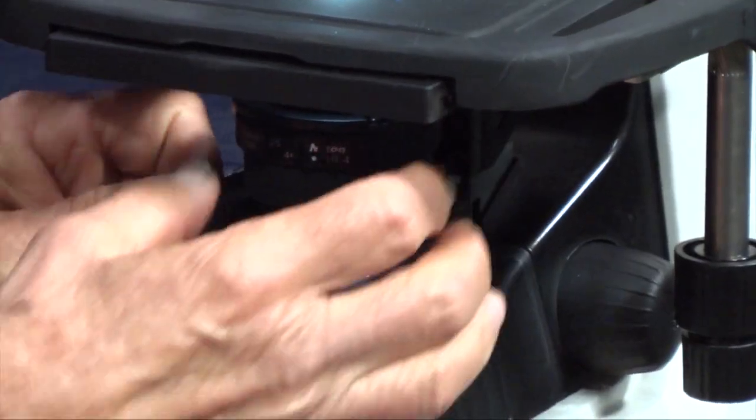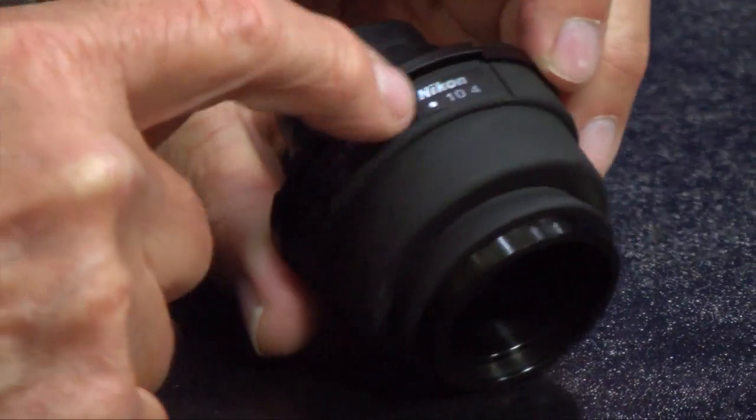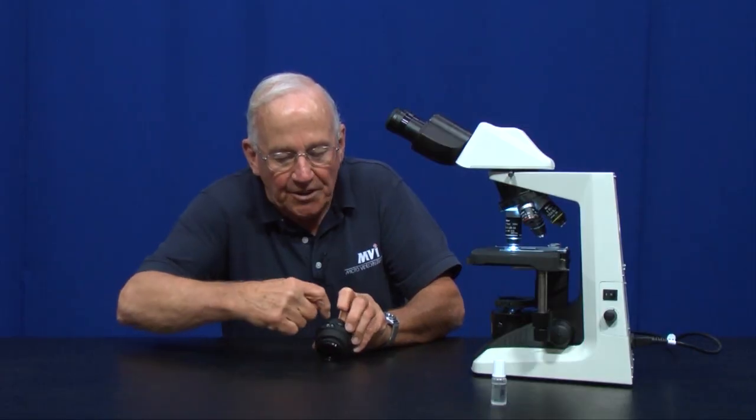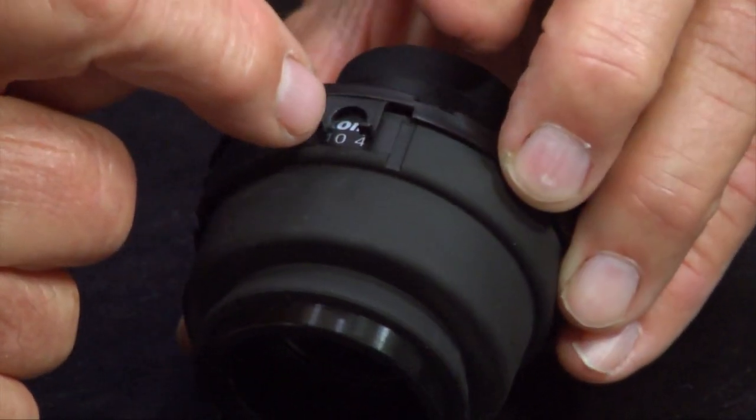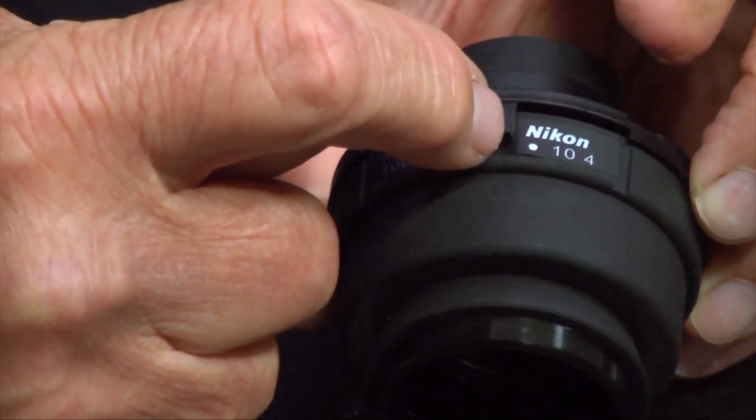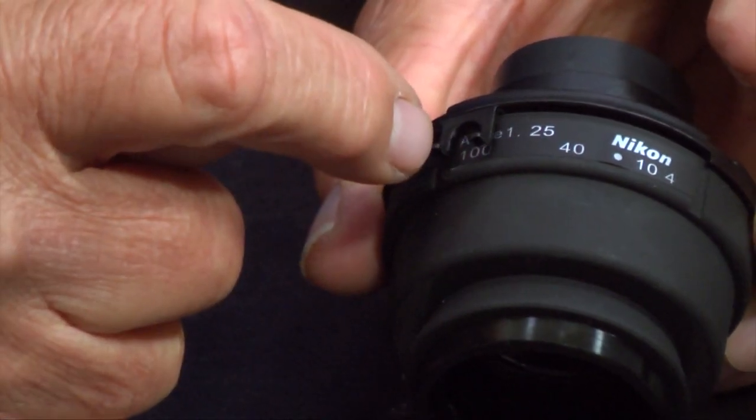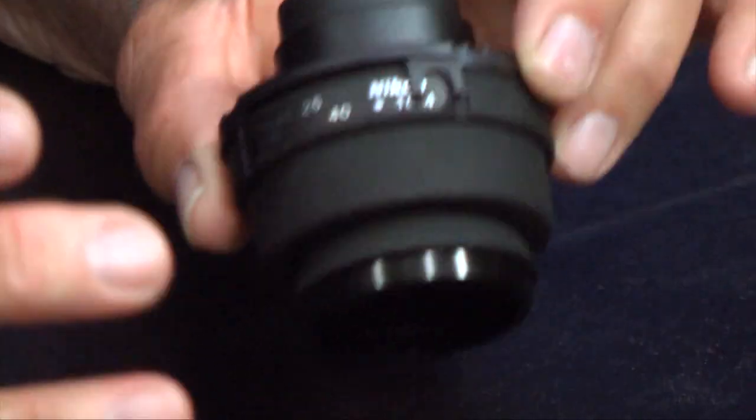I'm going to take the condenser off and just show you what it looks like. The condenser has a numbering system on the front. The numbering system corresponds to the magnification of the objectives. You can read the number 4 there, that's where it should be for the 4x objective. If you went to the 10x objective, you should close it down to number 10. Likewise for the 40x and 100x objectives. When you close that down, it adds contrast to the specimen. They have matched it perfectly to the objective magnification so that you get the optimum contrast for each objective.